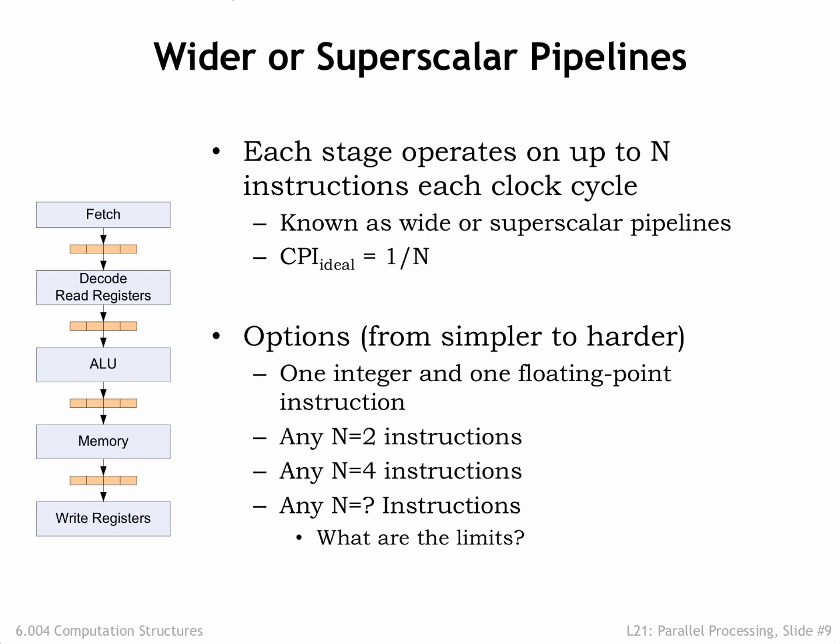So what value should we choose for N? Instructions that are executed by different ALU hardware are easy to execute in parallel — for example, ADDS and SHIFTS, or INTEGER and FLOATING POINT operations. If we provided multiple ADDERS, we could execute multiple INTEGER arithmetic instructions concurrently. Having separate hardware for ADDRESS arithmetic, called LOAD/STORE units, would support concurrent execution of LOAD/STORE instructions and INTEGER arithmetic instructions. By increasing the number of functional units in the ALU and the number of memory ports on the register file and main memory, we would have what it takes to support concurrent execution of multiple instructions.